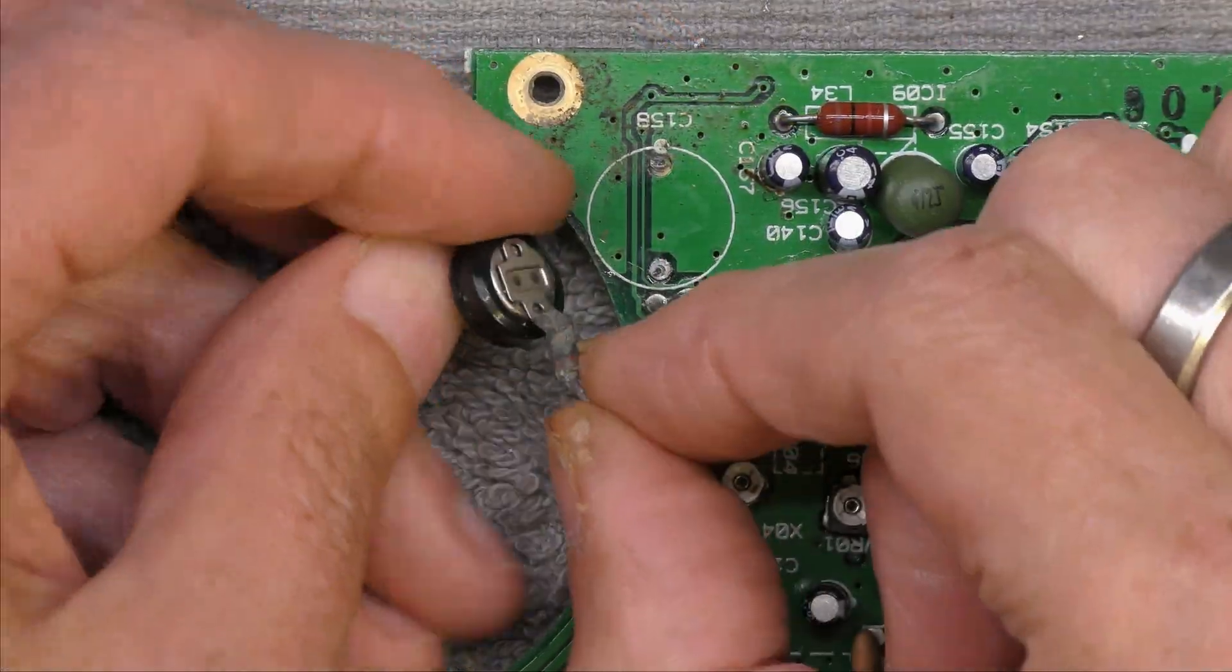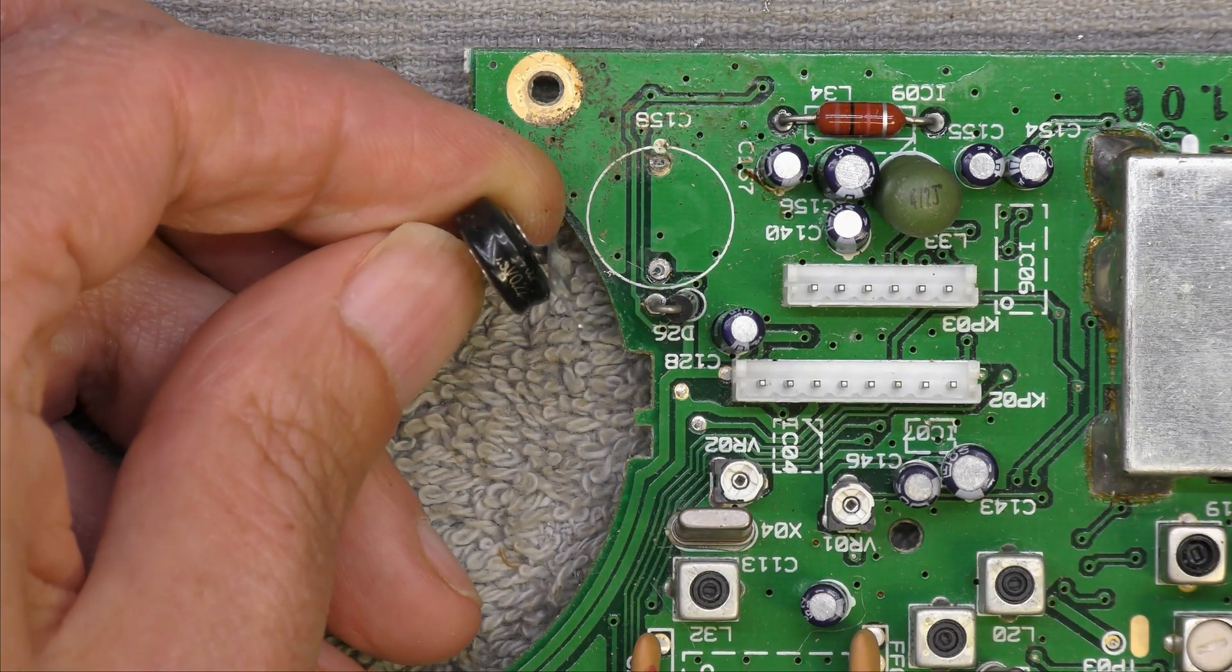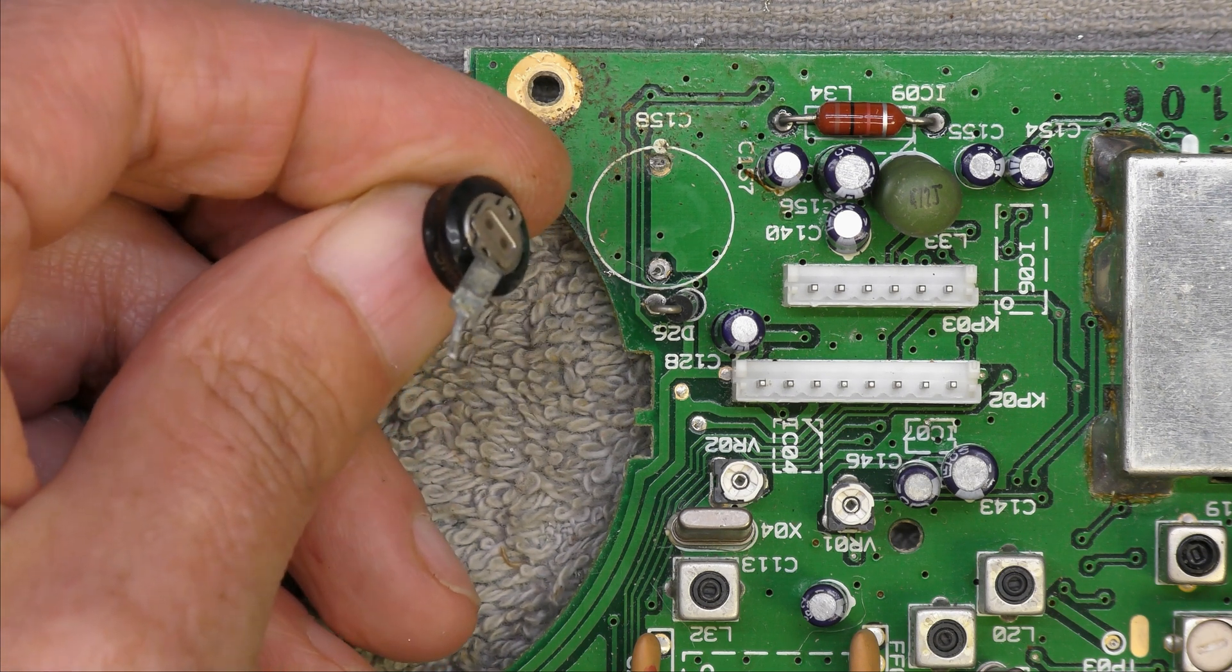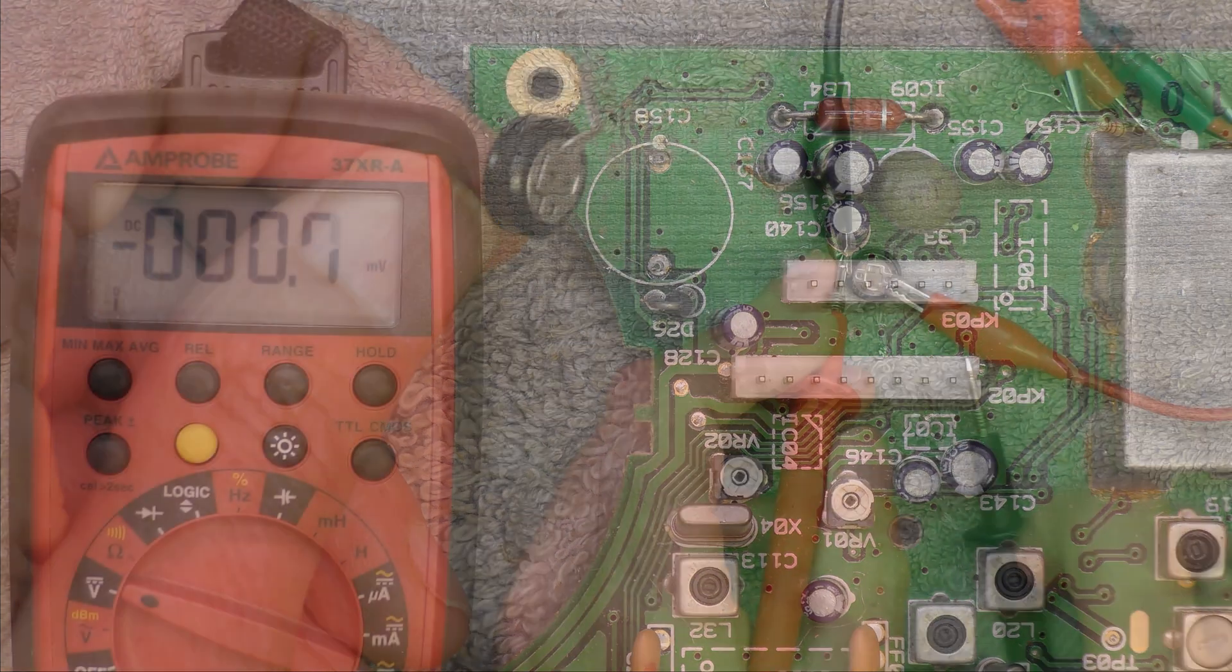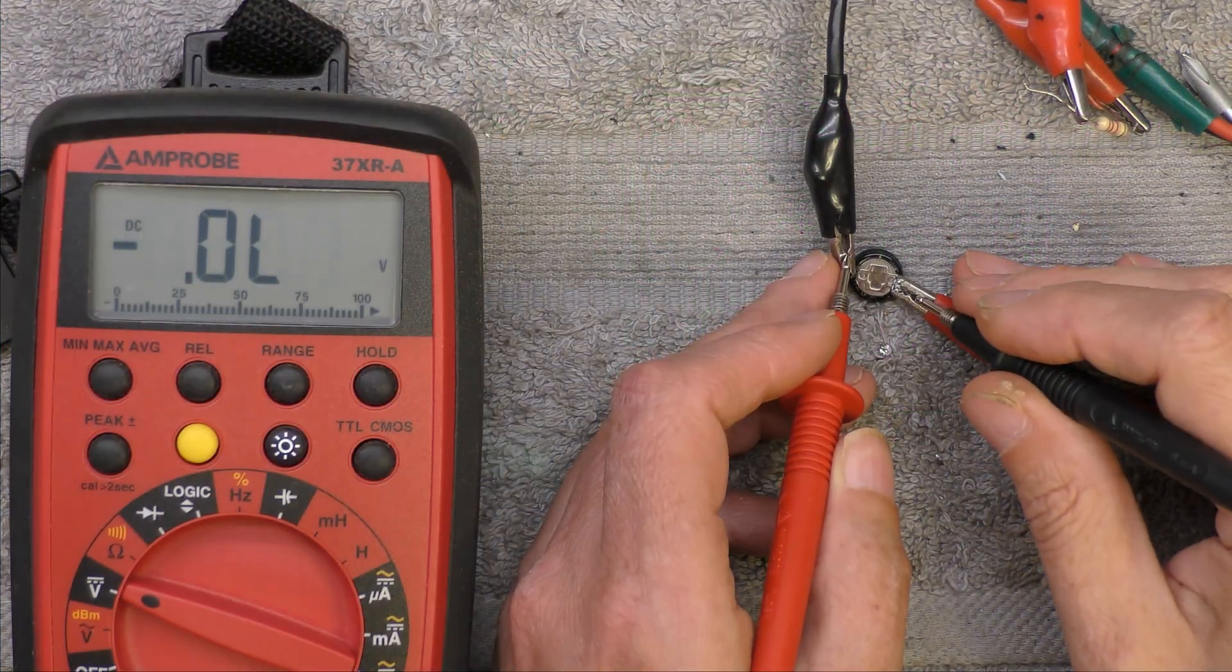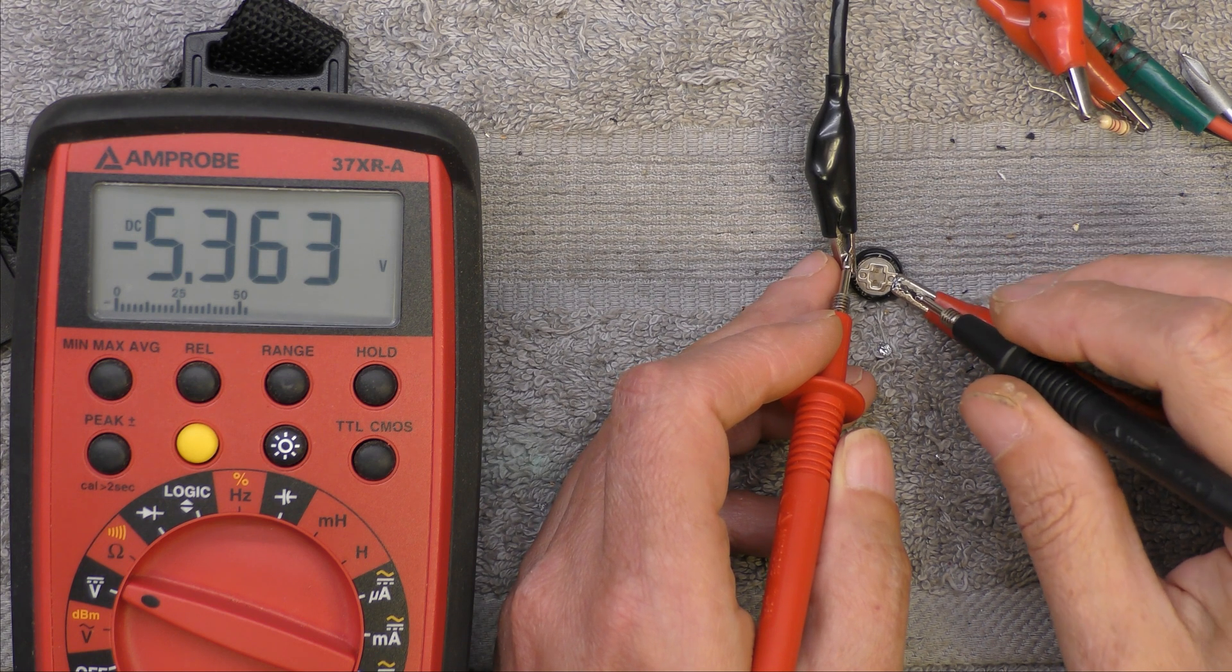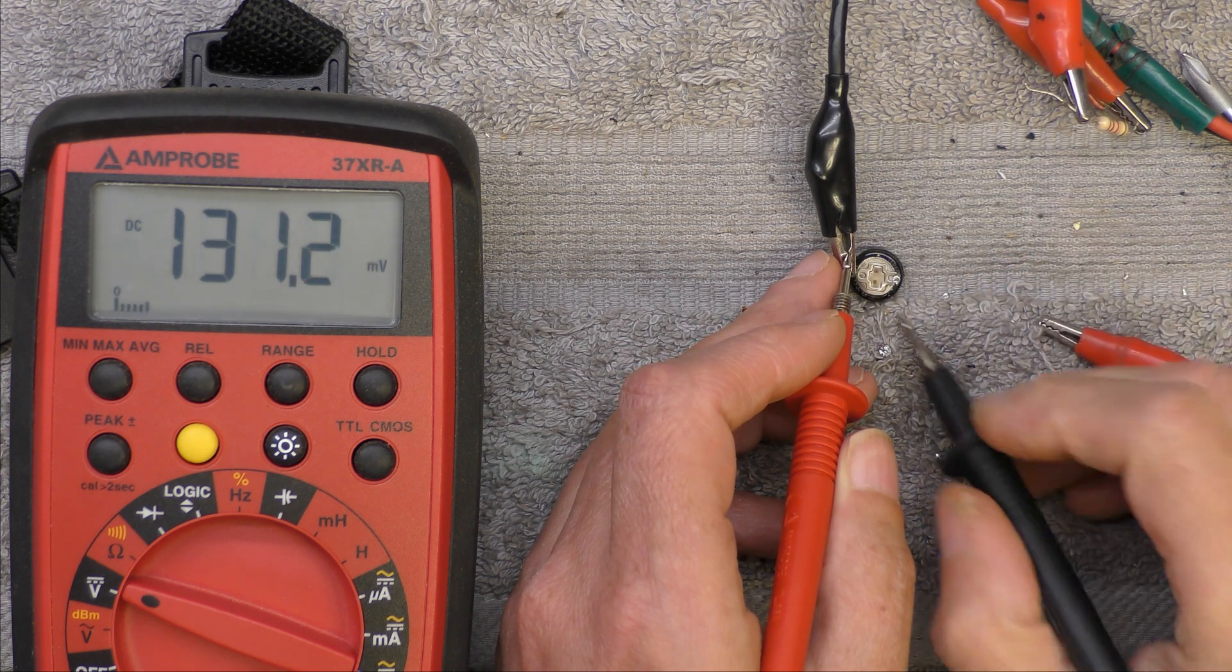So looking at the capacitor, it looks like 5.5V at 0.22 farads. And there also looks like evidence of corrosion here. So I think I'll clean the board up. Right, so I've got it separate out of the radio now. So I've got a resistor in series with it this time. So it's been on 5 minutes at least.